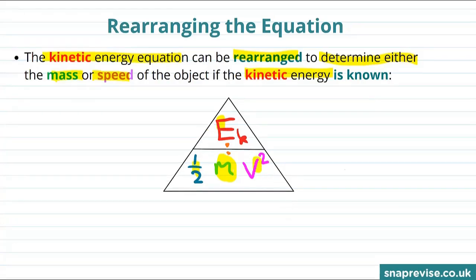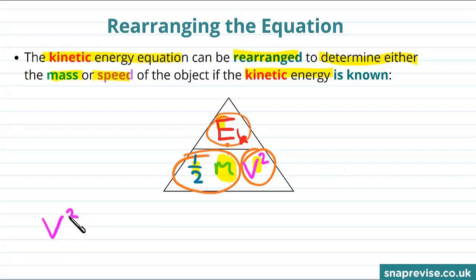On the other hand, if we wanted to find out what the value of the velocity squared was, then we would just read off the rest of the triangle, which says the kinetic energy divided by a half and divided by m. So that is v squared is equal to the kinetic energy divided by a half m.